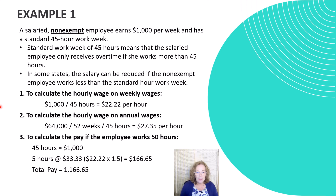Let's look at the second calculation. In this case, the annual salary is $64,000. You would take the annual salary divided by the number of weeks per year — 52 — and divide it by the standard number of hours per week, in this case 45, and arrive at $27.35 per hour.